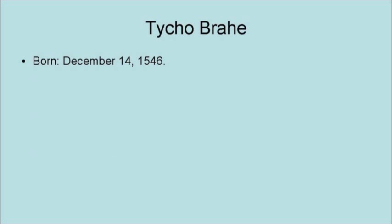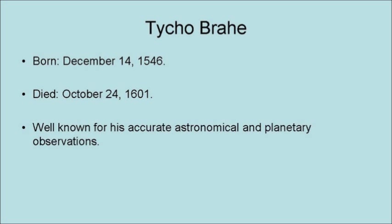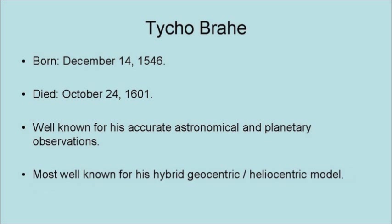Tycho was born December 14, 1546, and he died October 24, 1601. He is well known for his accurate astronomical and planetary observations. He is also known for his hybrid geocentric-heliocentric model.